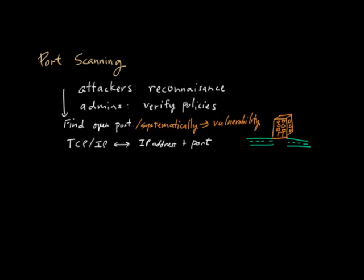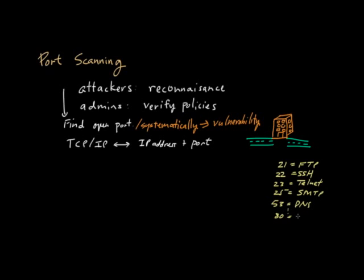Most internet-type applications run on very well-defined ports. For example, port 21 is typically associated with FTP; port 22 is affiliated with SSH; port 23 is Telnet; port 25 is SMTP, the Simple Mail Transfer Protocol for email; port 53 is associated with DNS; and port 80 is for the web, for HTTP traffic — all your internet browsing happens over port 80. There are actually 65,535 possible ports.